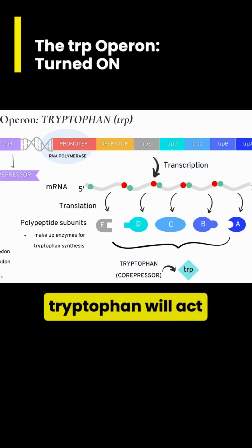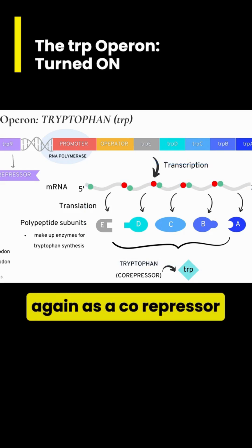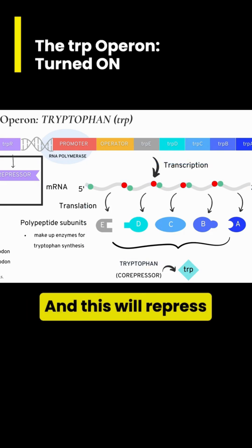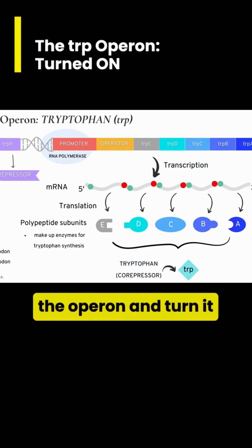Once enough tryptophan is made, it will act again as a co-repressor by binding to the repressor protein, and this will repress the operon and turn it off.